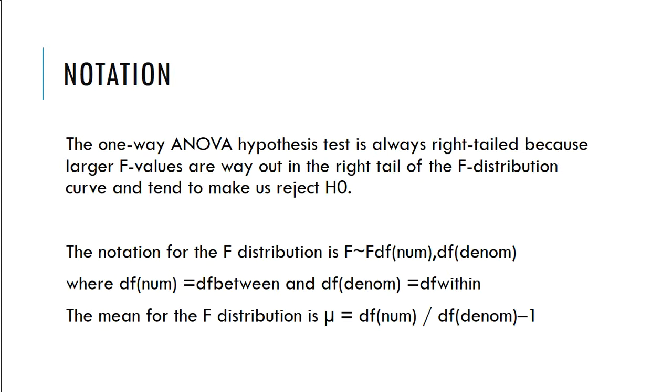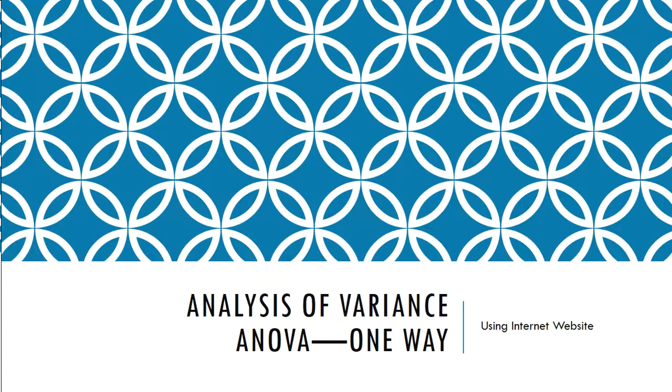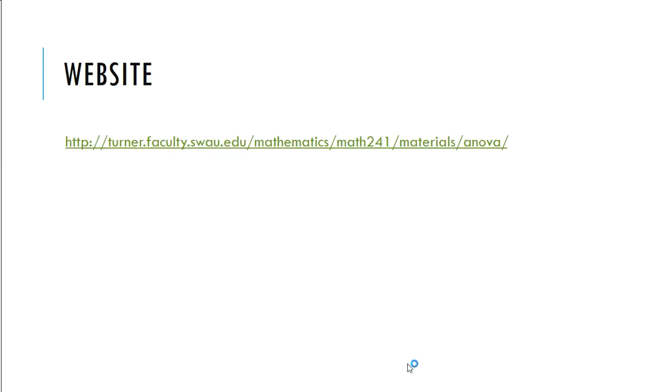And you're going to get that from the table. So don't worry about that. The mean of the F distribution is the mean equals to the degrees of the freedom of the numerator divided by the degrees of freedom denominator minus 1. So let's use the internet in the next video.